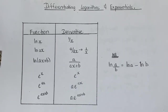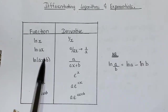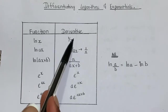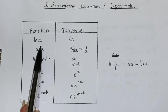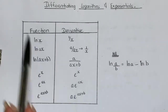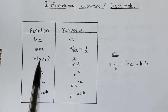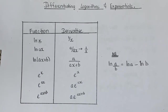When I say coefficient, I actually mean the derivative — it's the derivative of the polynomial inside. The derivative of x is 1, which goes over the x. The derivative of ax is a, which goes over ax. And the derivative of ax + b is still a, which goes over ax + b.